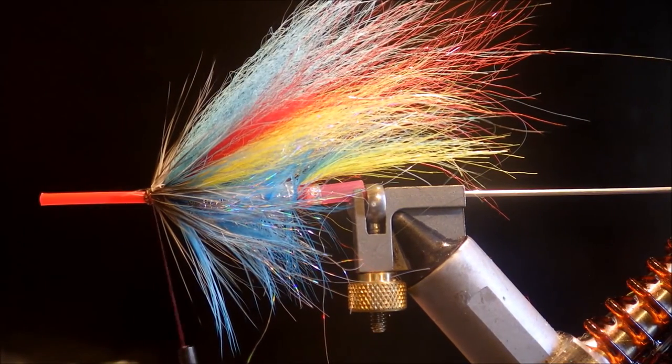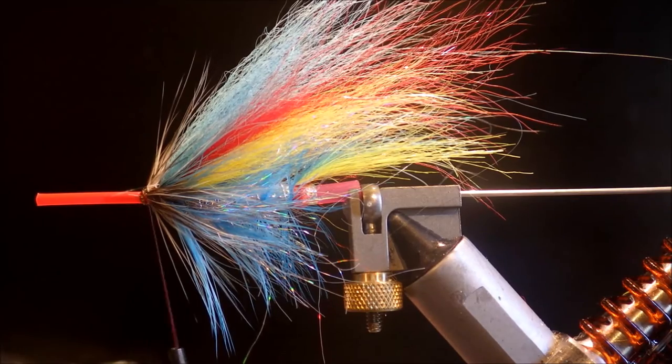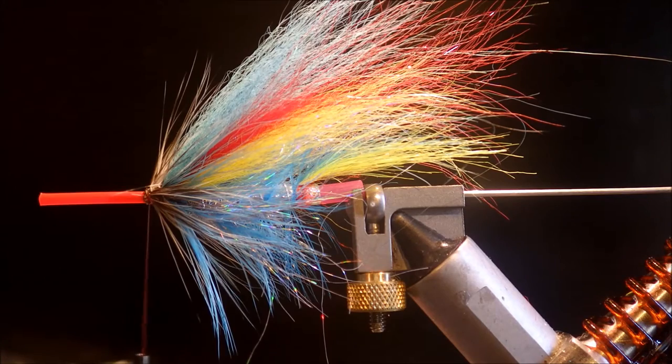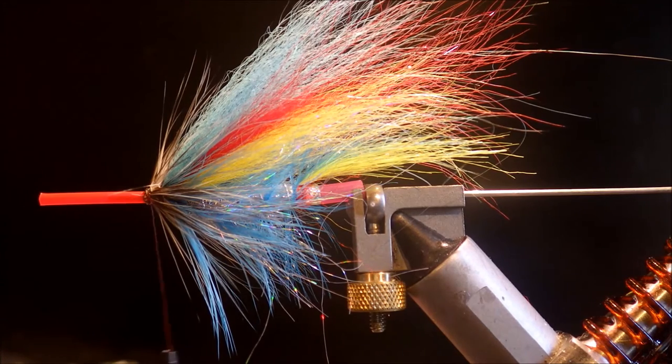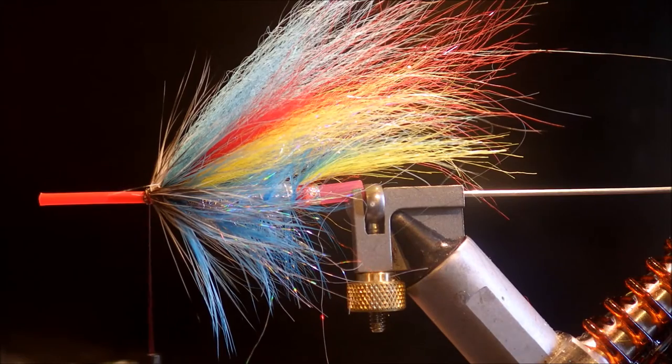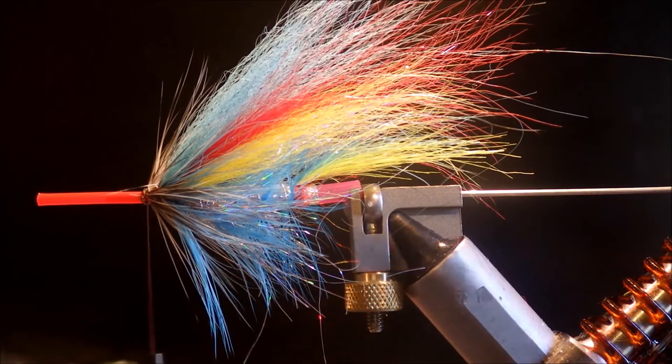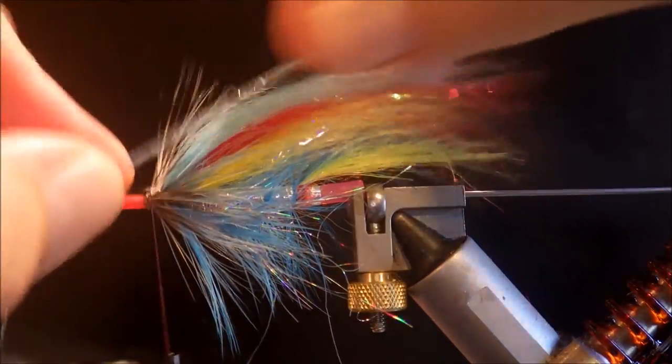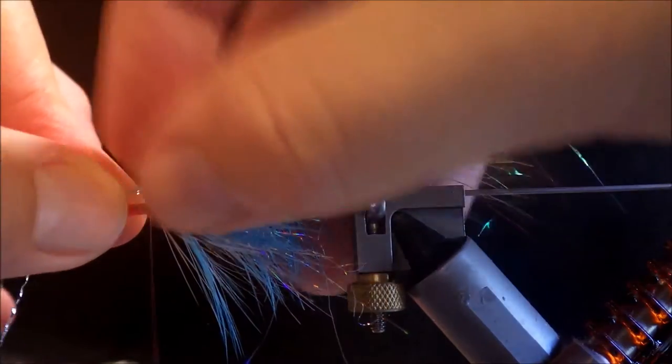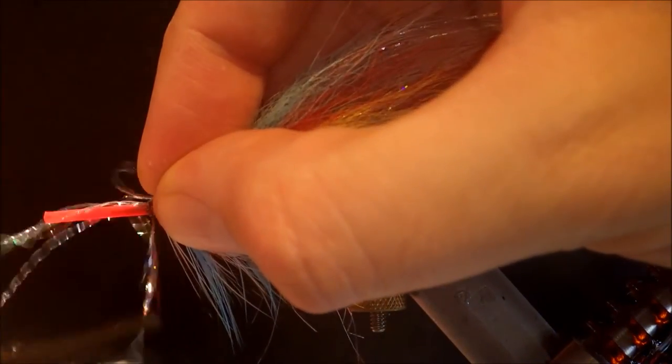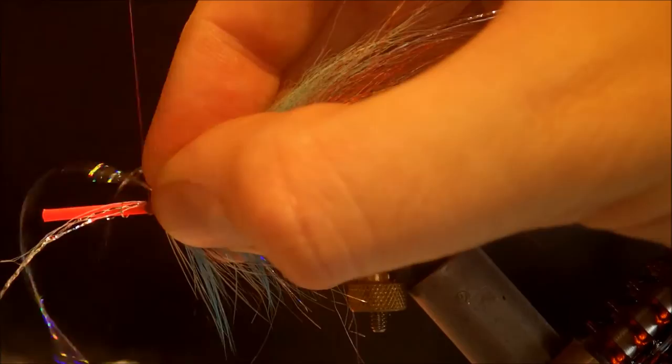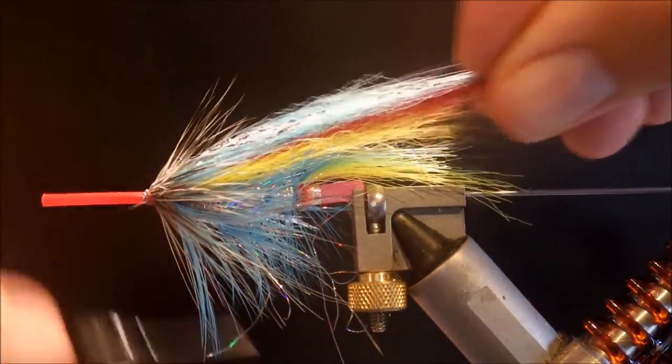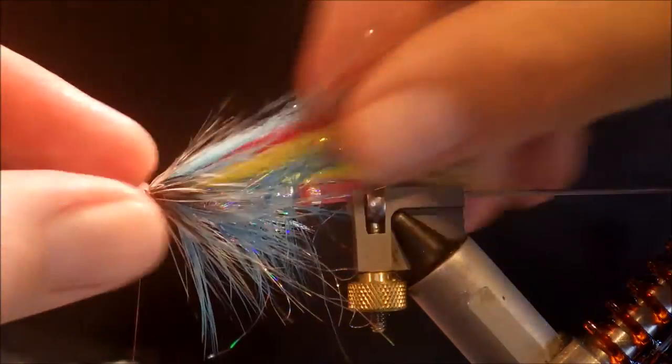Now we're almost done. Last bit of flash, we've got some silver holographic Subai sparkle here. It's really nice, it's a bit like polar flash. You could use that if you don't have any of this. Again just two or three strands is plenty and I'll let that come in just longer on one side. A couple turns to hold it, hold it all back. Just let that come across the top of the wing on either side.